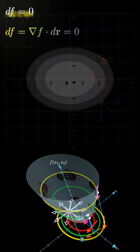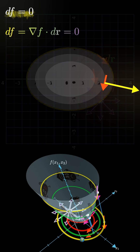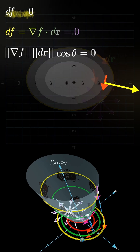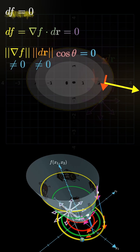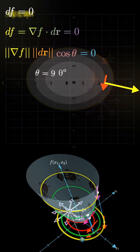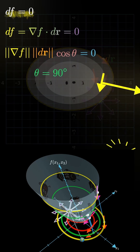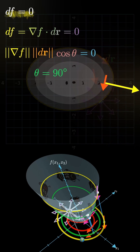What does that mean? Two nonzero vectors giving a dot product of 0 means they must be perpendicular. Recall the dot product identity: norm of grad f times norm of dr times cosine theta. If grad f is not 0 and dr is not 0, the only way the product is 0 is when cosine theta equals 0, meaning theta equals 90 degrees. So grad f is perpendicular to dr — that is, the gradient is perpendicular to the tangent line of the contour.